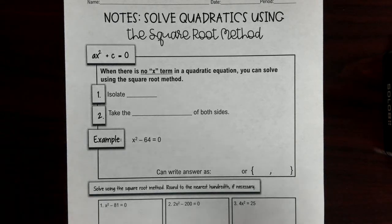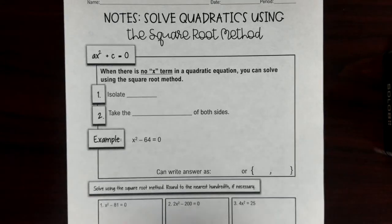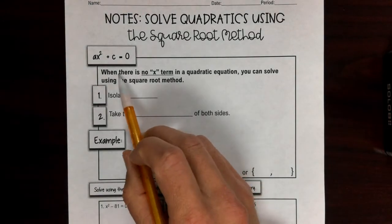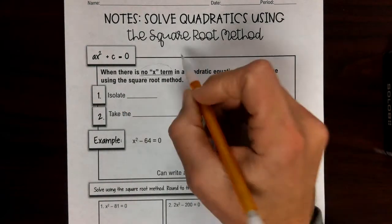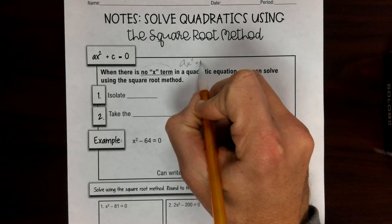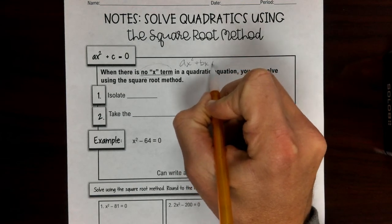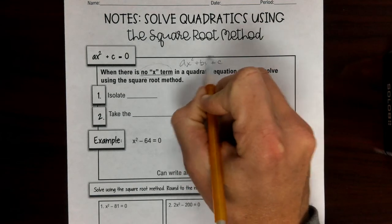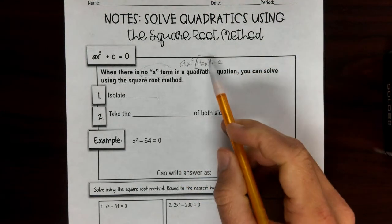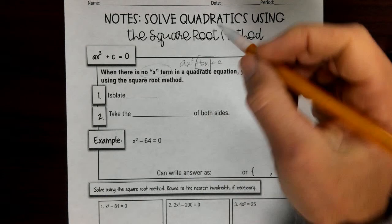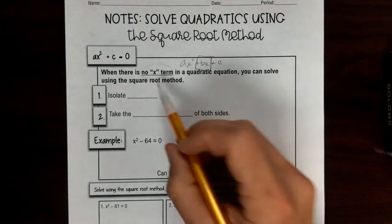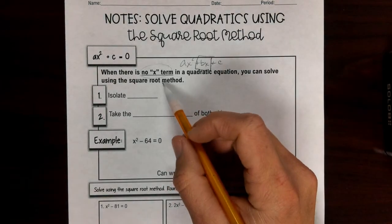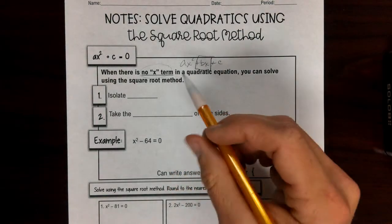Today we're going to solve using the square root method. First step: when there is no x term — going back to our standard form ax² + bx + c — when there is no middle term, no x to the first power term, we are able to solve using the square root method. This is a shortcut method.